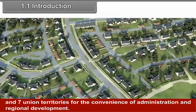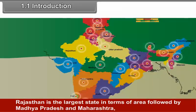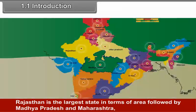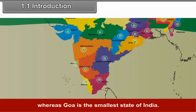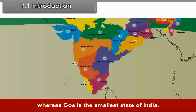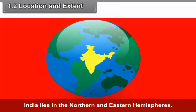India is a democratic country which is divided into 28 states and 7 union territories for the convenience of administration and regional development. Rajasthan is the largest state in terms of area, followed by Madhya Pradesh and Maharashtra, whereas Goa is the smallest state of India.